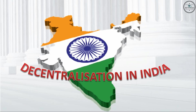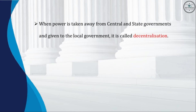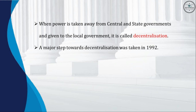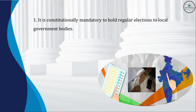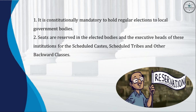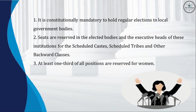Decentralization in India: when power is taken away from central and state governments and given to local government, it is called decentralization. A major step towards decentralization was taken in 1992, when the constitution was amended to make the three tiers of democracy more powerful and effective. It is constitutionally mandated to hold regular elections to local government bodies. Seats are reserved in elected bodies and for executive heads for Scheduled Castes, Scheduled Tribes, and Other Backward Classes, and at least one third of all positions are reserved for women.